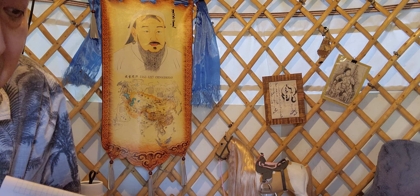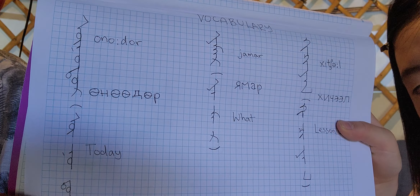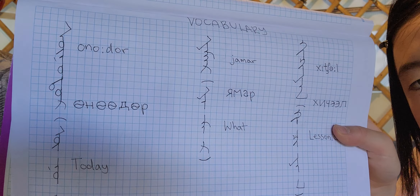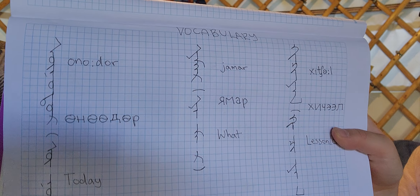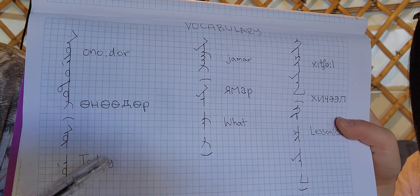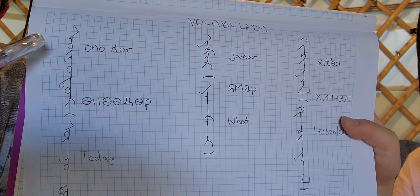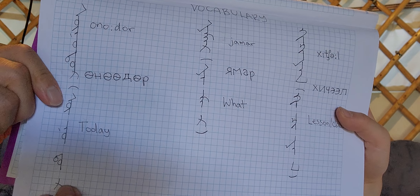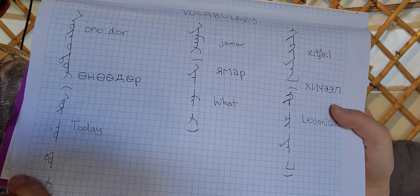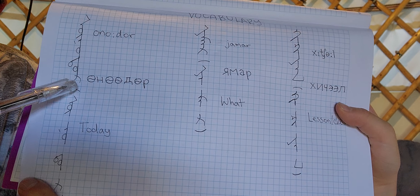Now we go through a few main vocabulary. The first one is about today. Today is Unadur. Unadur.